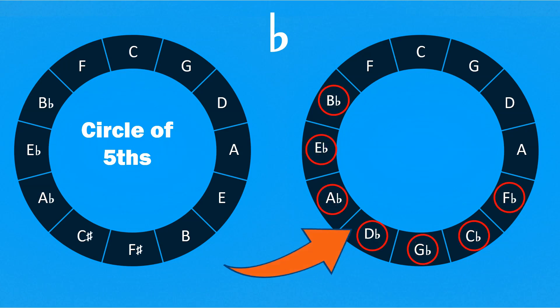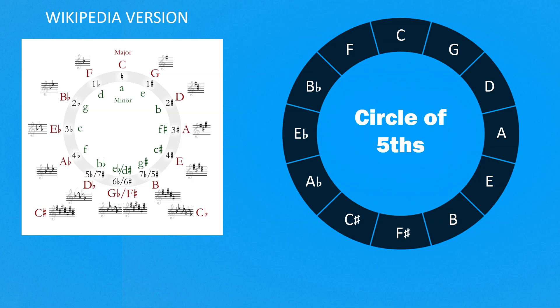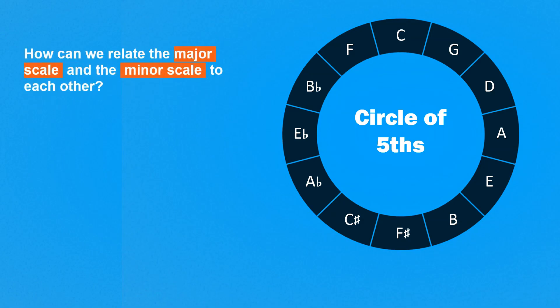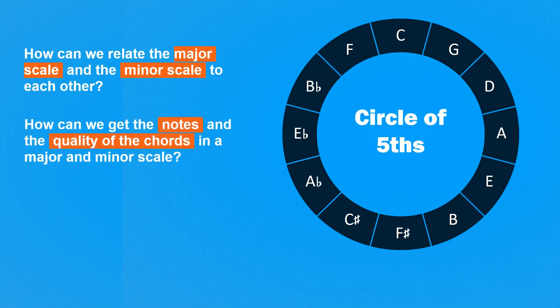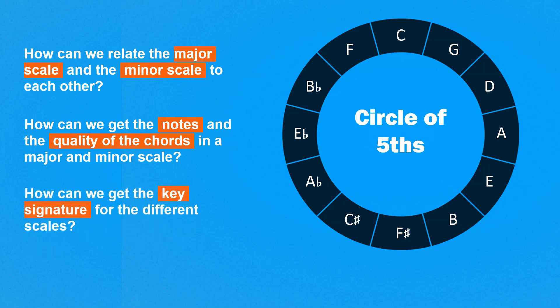What we need to do is just print them into our mind. Now the question is: can we really get all the information of the standard circle just by looking at this simple circle of fifths? How can we relate the major scale and the minor scale to each other? How can we get the notes and the quality of the chords in the major and minor scale? How can we get the key signature for different scales? So let's start to use the circle.